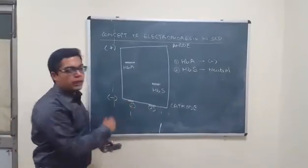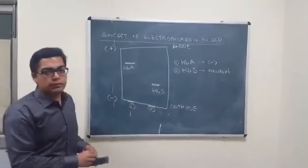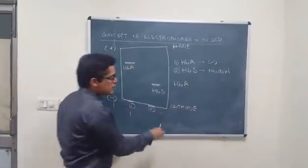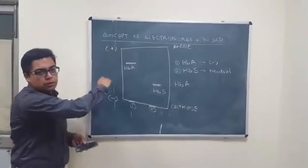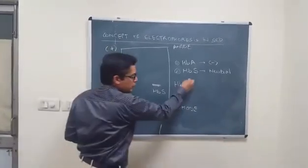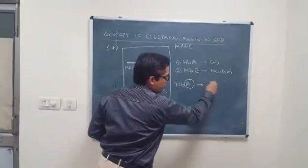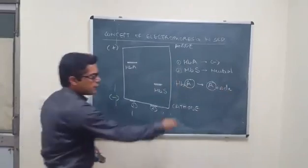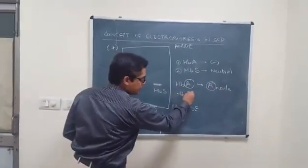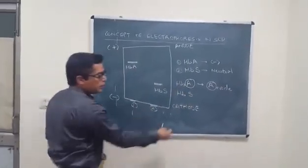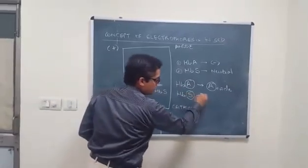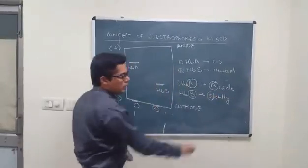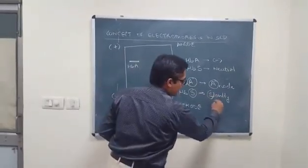If you remember this concept — that we have a change from a polar amino acid to a neutral amino acid — most of you can answer such exam questions easily. An easy way to remember: hemoglobin A, as seen in the diagram, has faster migration toward the positive charge or anode, while hemoglobin S has a relatively slower migration toward the anode.